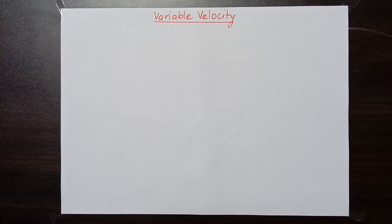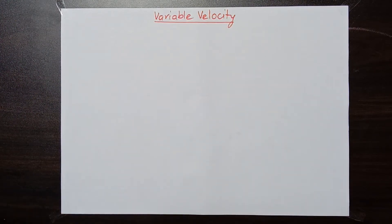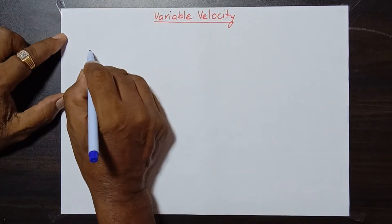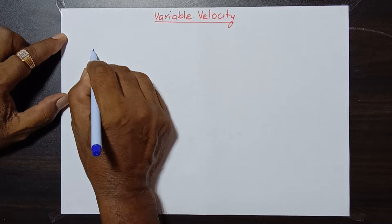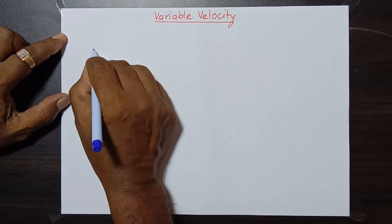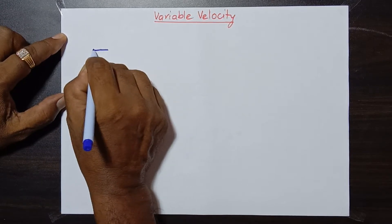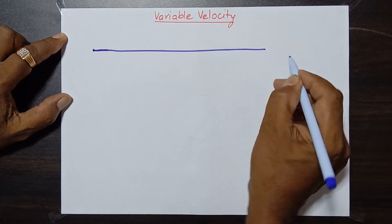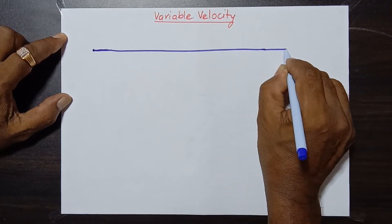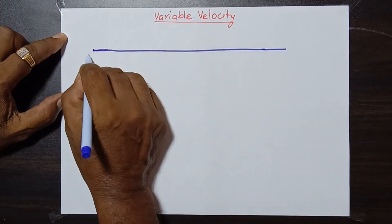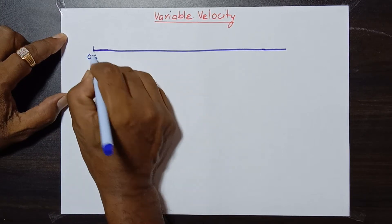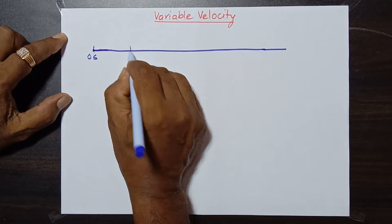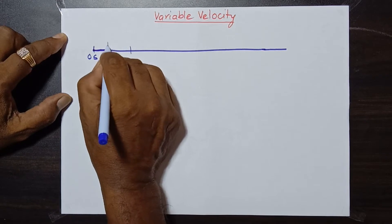Let's talk about variable velocity. I want to start with an example. If a body starts to move from this point and it has linear motion — means motion in a straight line — and let's say in the first second, from zero seconds to the end of one second, it covers 10 meters distance.